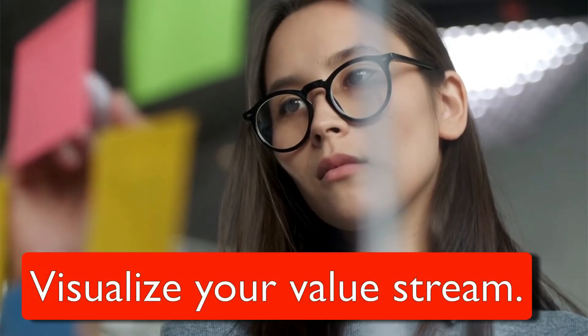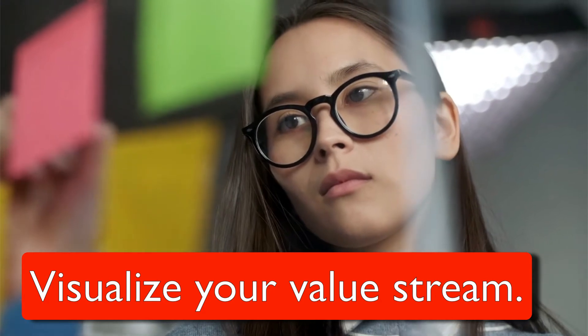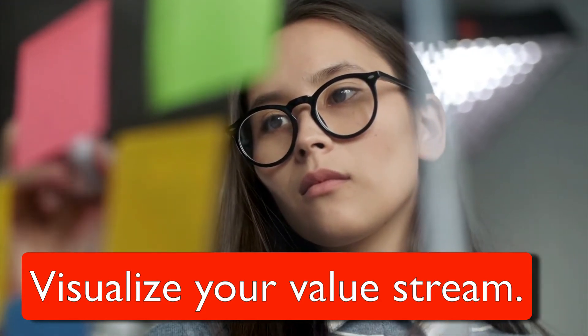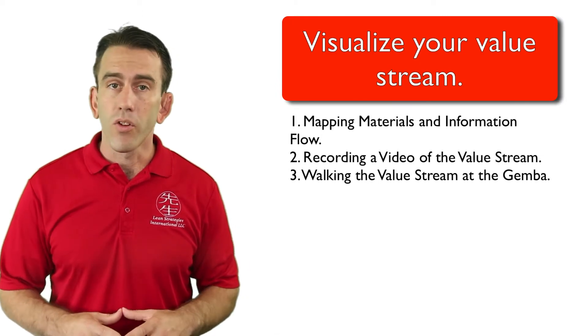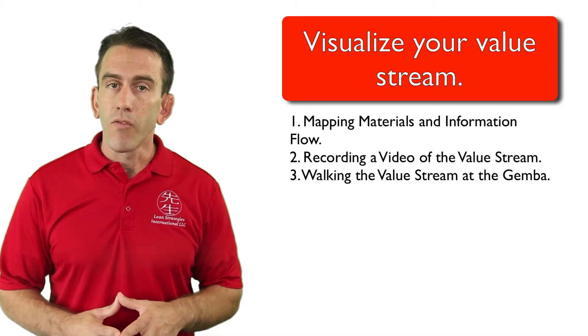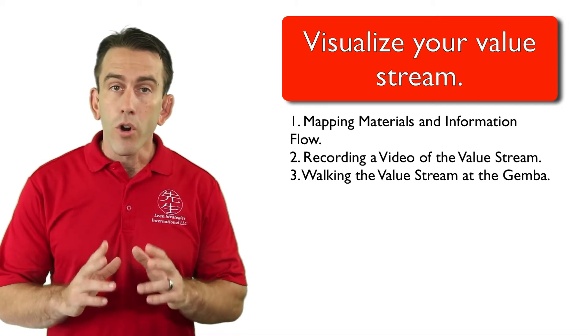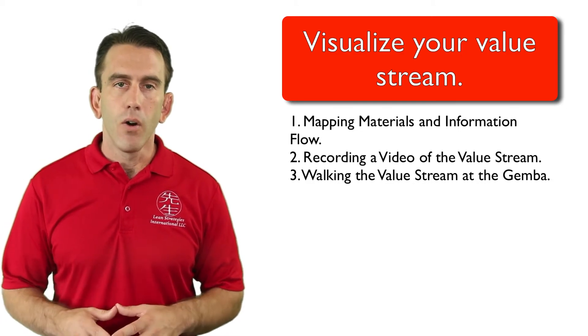Visualize your value stream. One very common method of revealing the waste of transportation is to map the value stream out for the product, family, or process. This can help you to visualize waste and take the necessary actions to reduce or remove unnecessary transportation. Other ways to visualize your value stream include mapping the material and information flow, recording a video, or walking the value stream at the Gemba and taking notes.